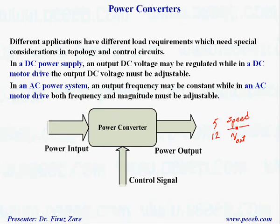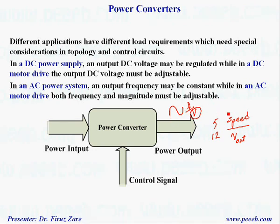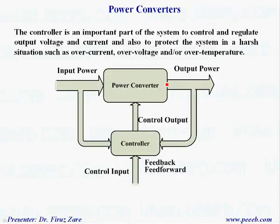In an AC power system where the output voltage should be AC, we should be able to control the frequency and magnitude. If it's an AC power system application, normally the frequency is constant and we need to control the magnitude. In an AC motor drive, we should be able to control both frequency and magnitude in order to control the speed.